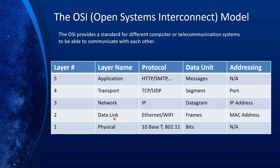Layer two is called the data link layer. The protocol is Ethernet or Wi-Fi depending on whether it's wired or wireless. The data unit is frames, and the addressing scheme is MAC address. One important thing about this data link layer: it is point-to-point, so we can only go one hop. For example, from your computer to your internet provider is one hop, and then from that internet provider to your final destination like target.com would be a different hop and a different Ethernet segment.